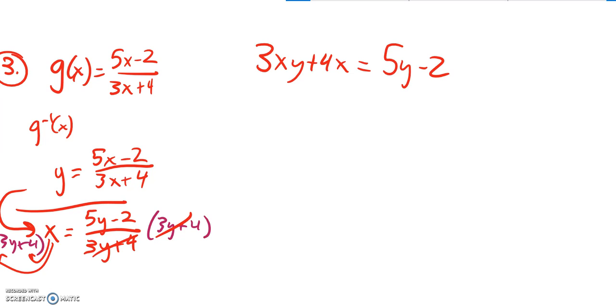Alright, and so then now the issue is I've got y's all over the place. I have y's here and y's here. And I want to get y all alone, I want to solve for y. So I'm going to subtract 5y from both sides, and that's to get both the y's on the same side.